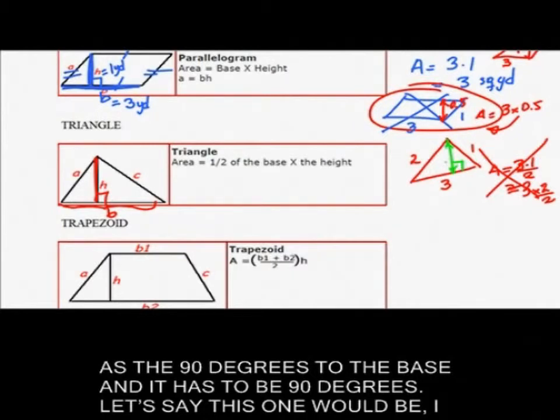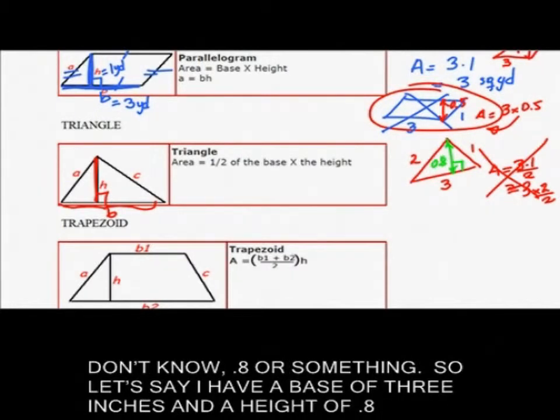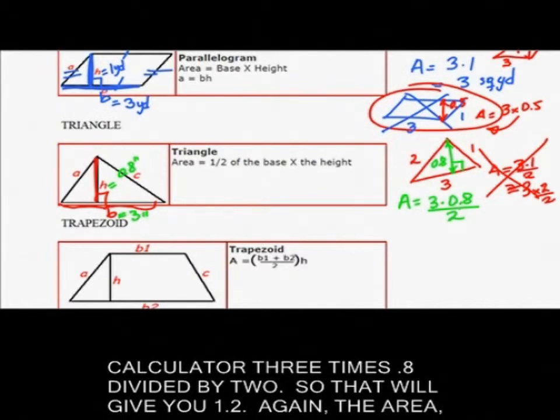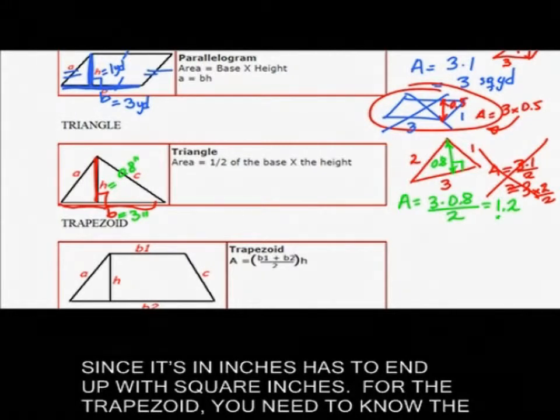But in this case you have to take the height as the 90 degrees to the base. Let's say this one would be 0.8 or something. So let's say I have a base of 3 inches and the height of 0.8 inches. So the area would be 3 times 0.8 divided by 2. That will give you 1.2. Again the area since it's in inches has to end up with square inches.